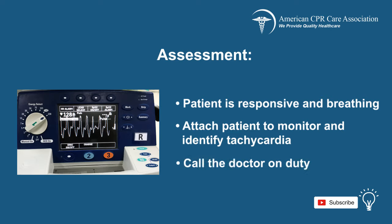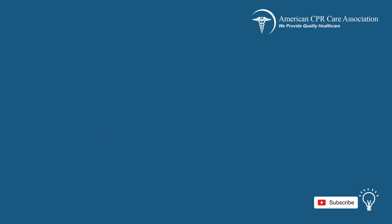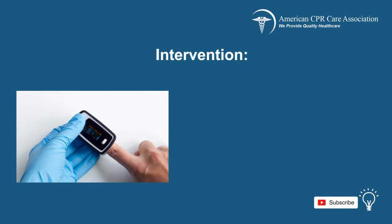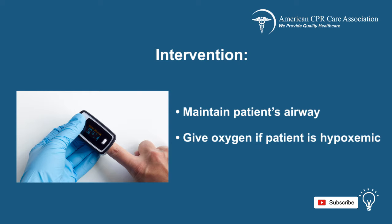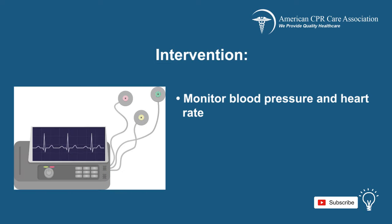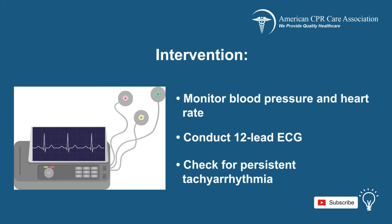Call the doctor on duty and start with interventions. Maintain the patient's airway, help with breathing, and give oxygen if the patient is hypoxemic. Monitor her oxygen saturation, blood pressure, and heart rate. Conduct a 12-lead ECG and diagnose the patient. Check for persistent tachyarrhythmia.